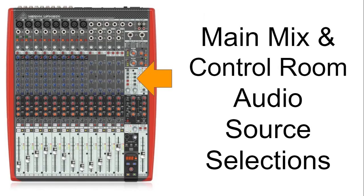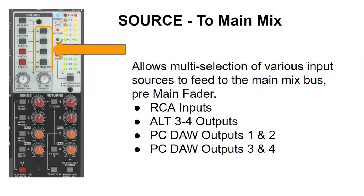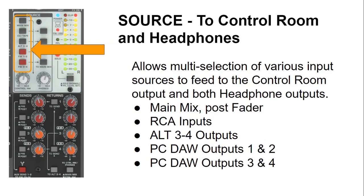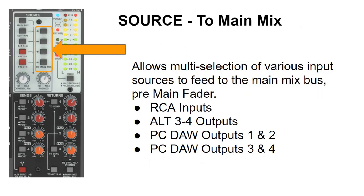You will find the multiple audio source selection to the main mix, as well as the control room and headphone output, on the mixer right next to the LED level displays. There are two columns of buttons. The four on the right-hand side are the selection for the main mix, and the ones on the left are the selection of audio sources to the control room and headphone output. You can select one or all of the buttons at the same time.